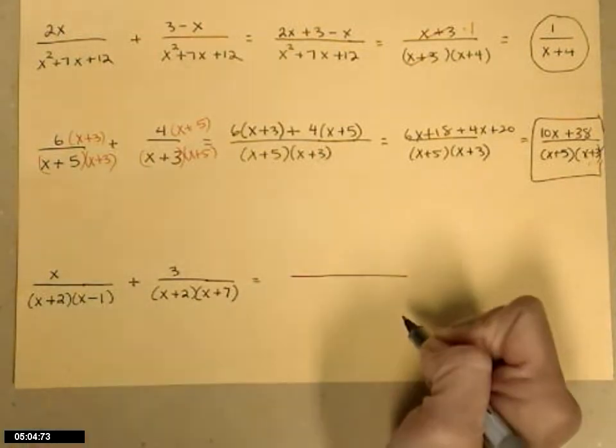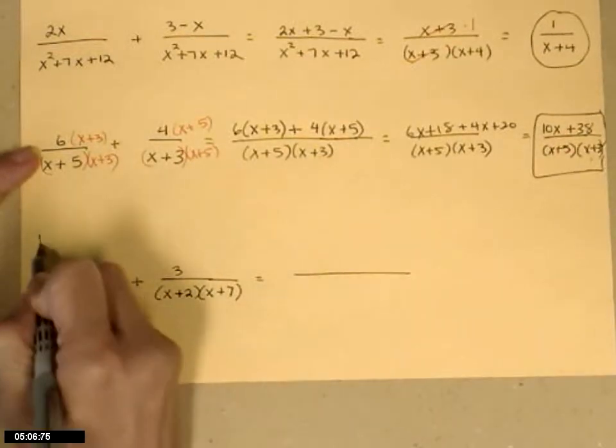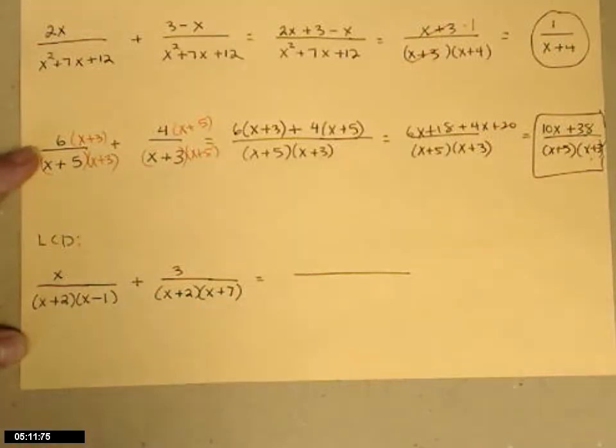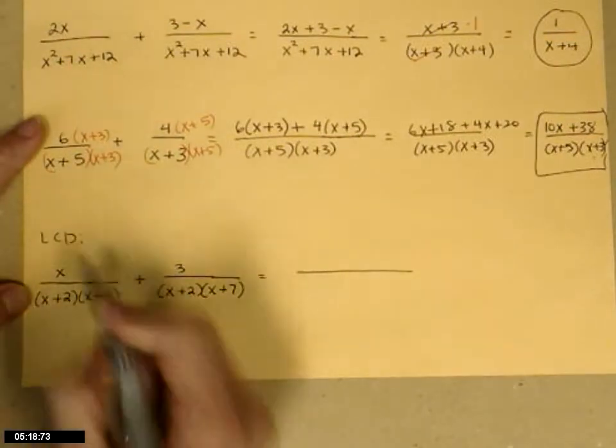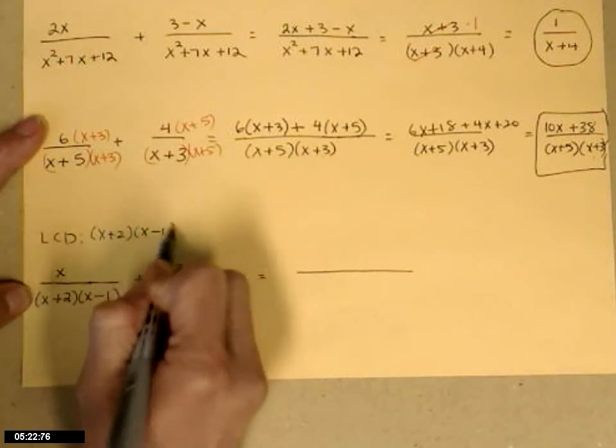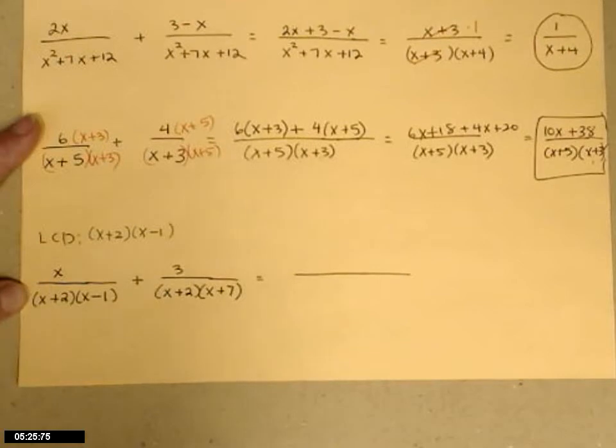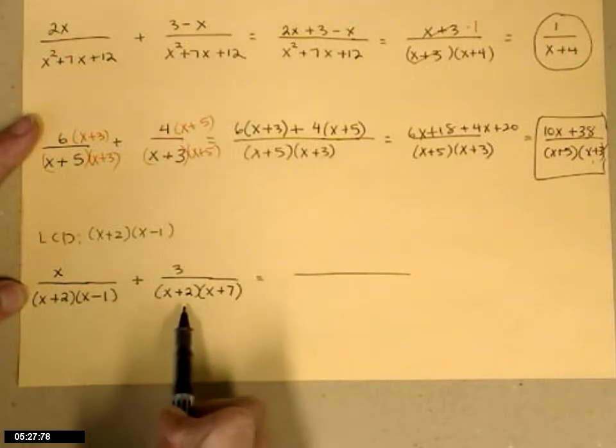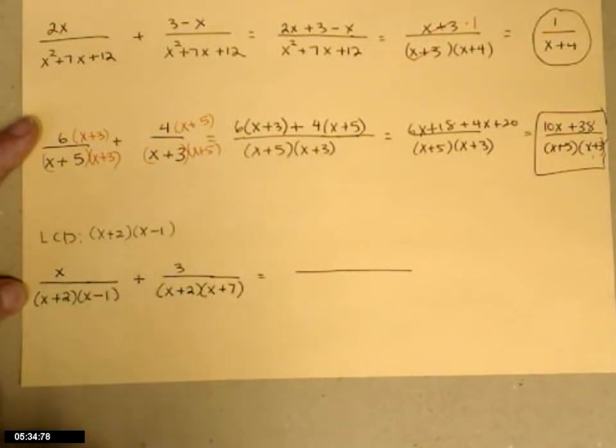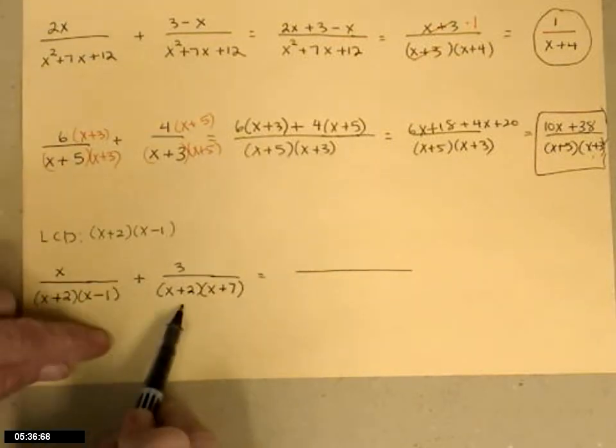My lowest common denominator, the LCD, has to take care of every single factor I see in either of these. So the way that I like to do it is I pick one of my fractions, usually the one on the left, and I write down all of its factors: x plus 2 times x minus 1. Then I look at the other fractions in my addition problem, and I see does it have any factor in the denominator that's not accounted for here.